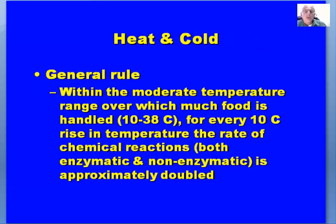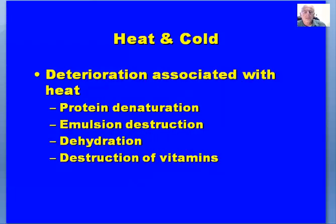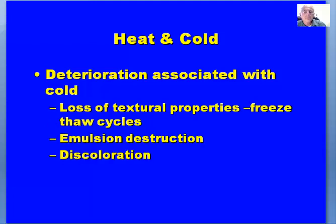Heat and cold: as a general rule within the moderate temperature range over which much food is handled, for every 10°C rise in temperature the rate of chemical reactions — both enzymatic and non-enzymatic — is approximately doubled. This can lead to spoilage and deterioration, although heat and cold are also used as methods of food preservation. Deterioration associated with heat includes protein denaturation, destruction and loss of emulsion, dehydration, and destruction of vitamins — particularly some B vitamins and vitamin C. With cold, there can be loss of textural properties through freeze-thaw cycles.